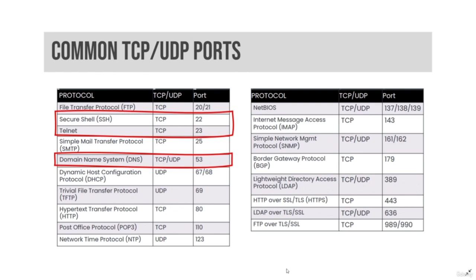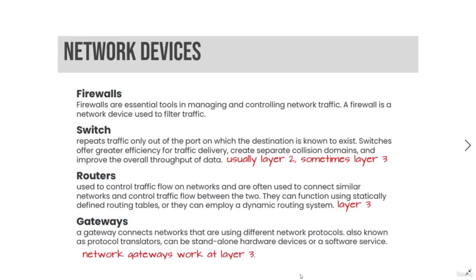Hypertext Transfer Protocol, or HTTP, transfers unencrypted web-based data. HTTPS, or Hypertext Transfer Protocol Secure, transfers encrypted web-based data via SSL/TLS. HTTP uses TCP port 80 and HTTPS uses TCP port 443. HTML, or Hypertext Markup Language, is used to display web content.